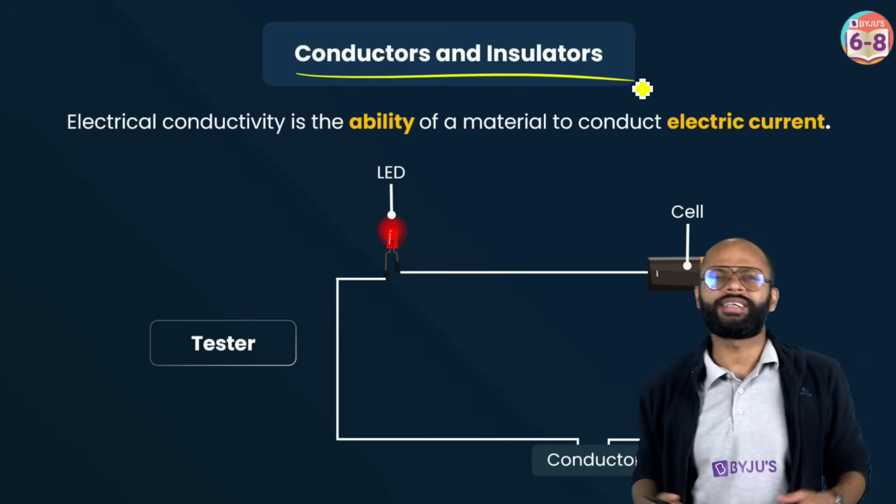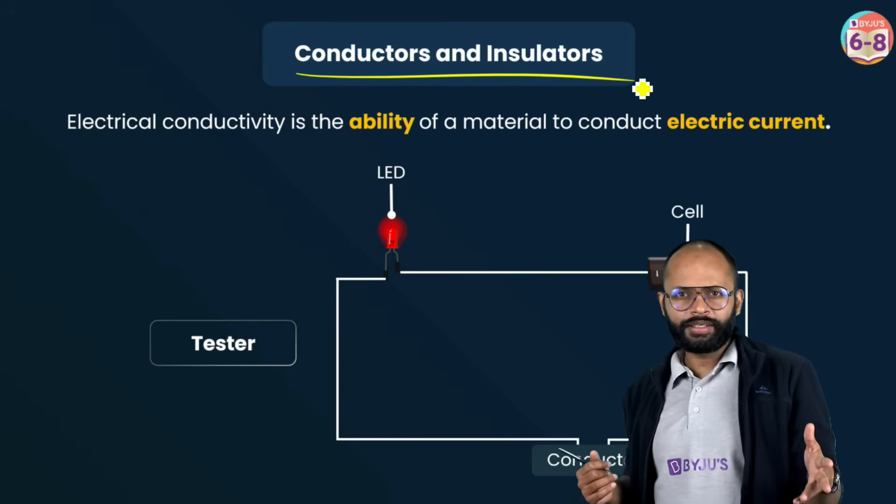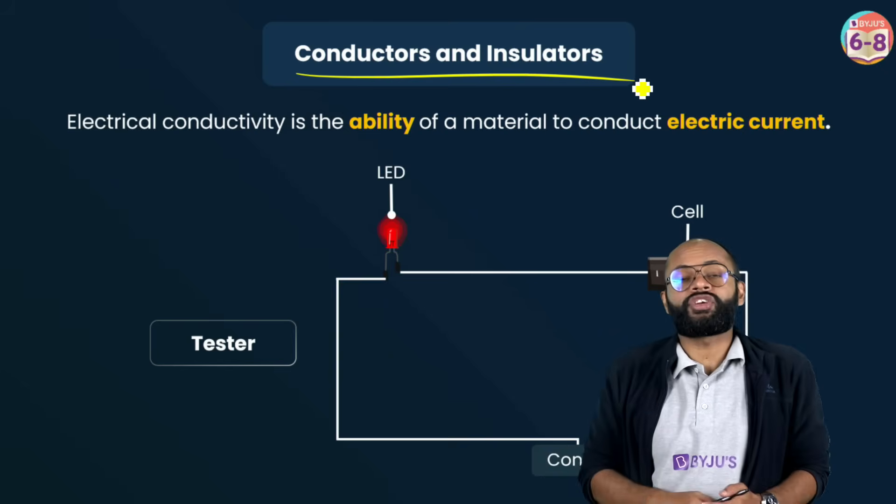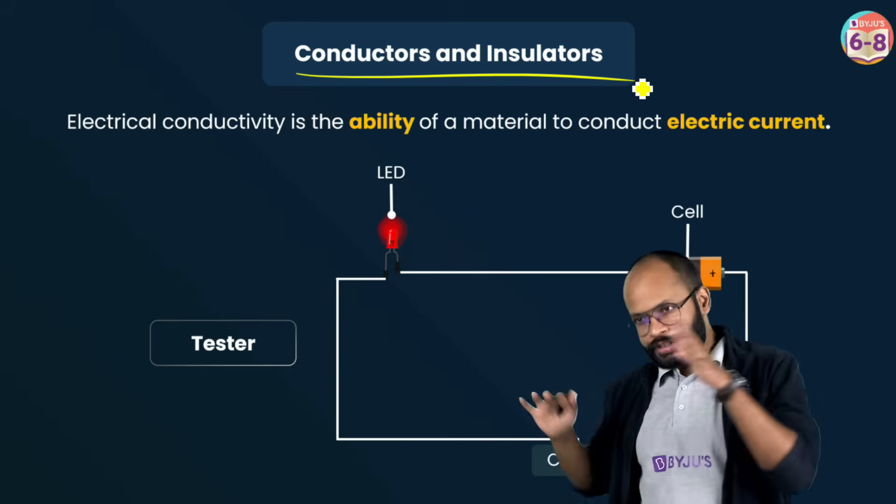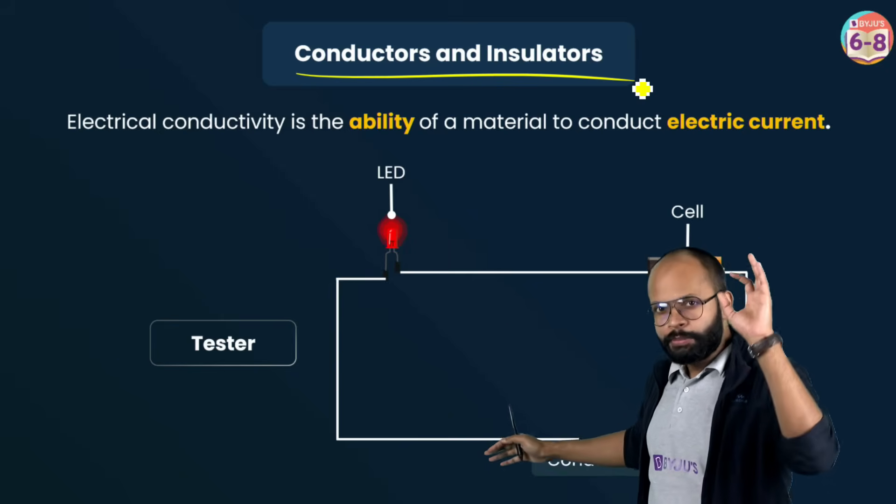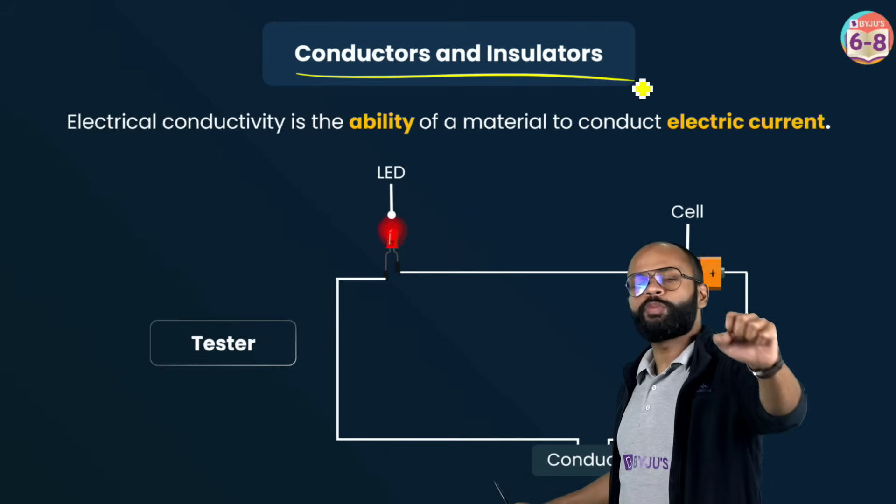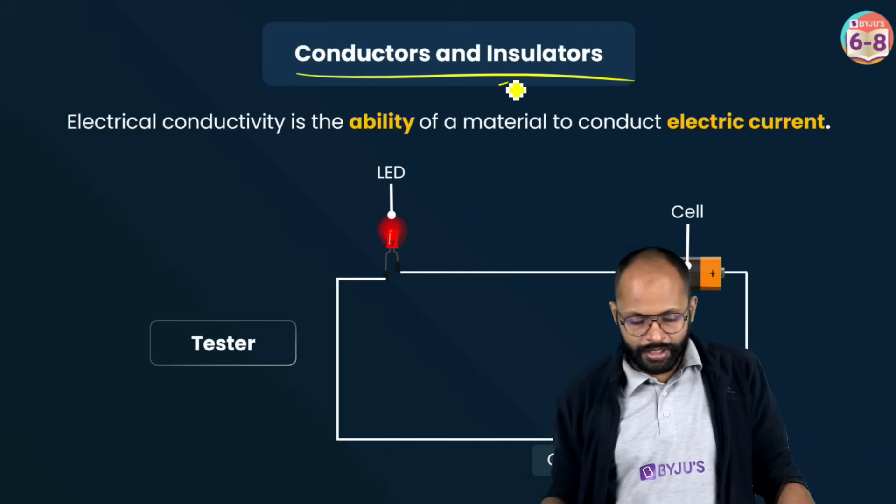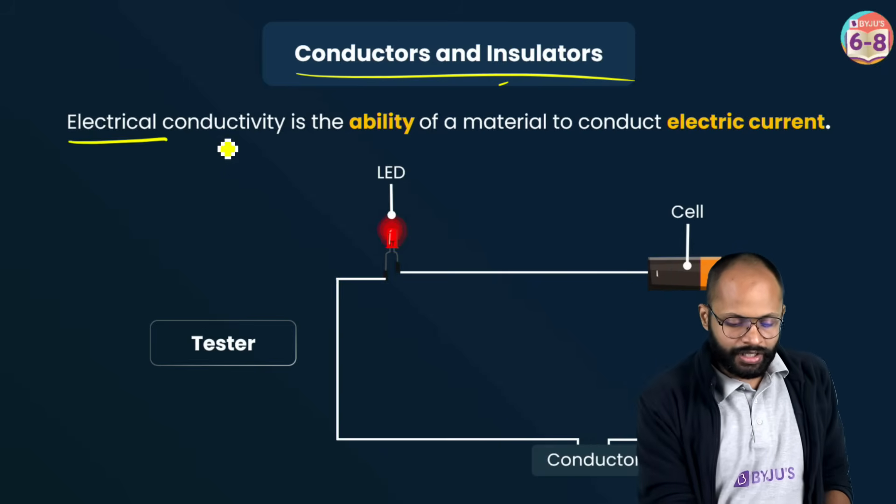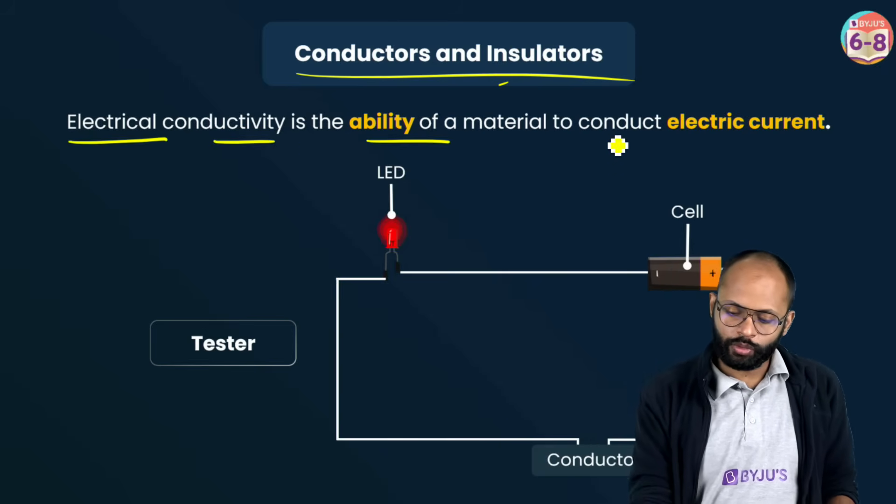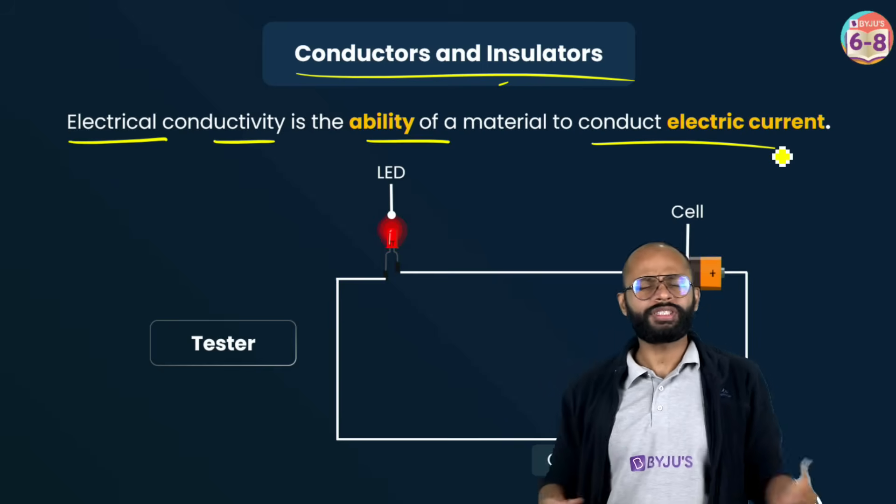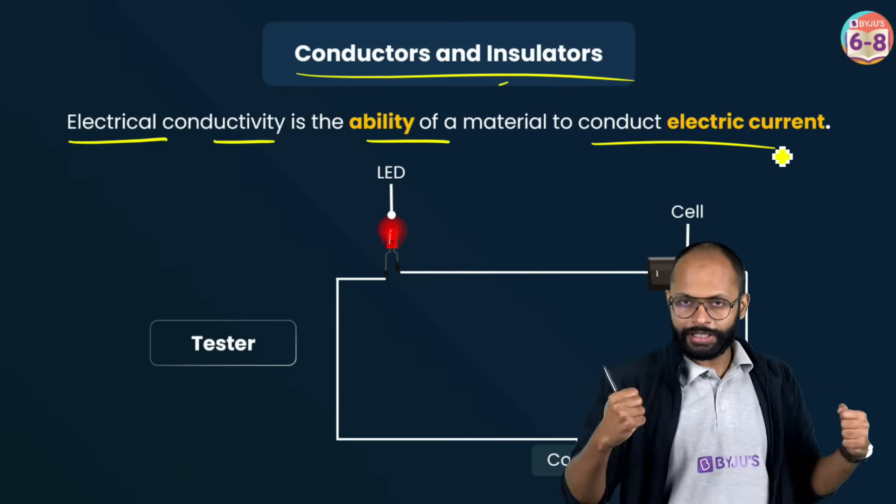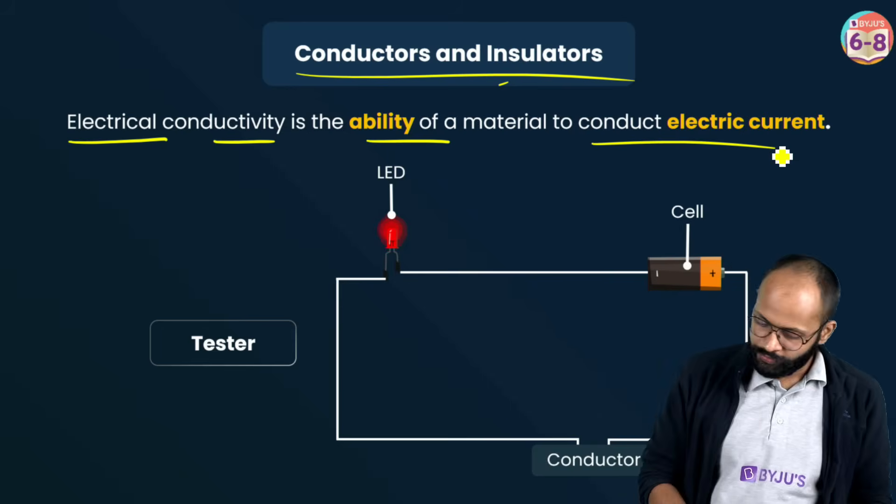We all know what is a conductor. When we say conductor, it's a chapter of electricity. Someone will ask you about electrical conductors, electrical insulators. The materials which allow current to pass through them are conductors, and which do not are called insulators. Electrical conductivity is the ability of a material to conduct electric current.